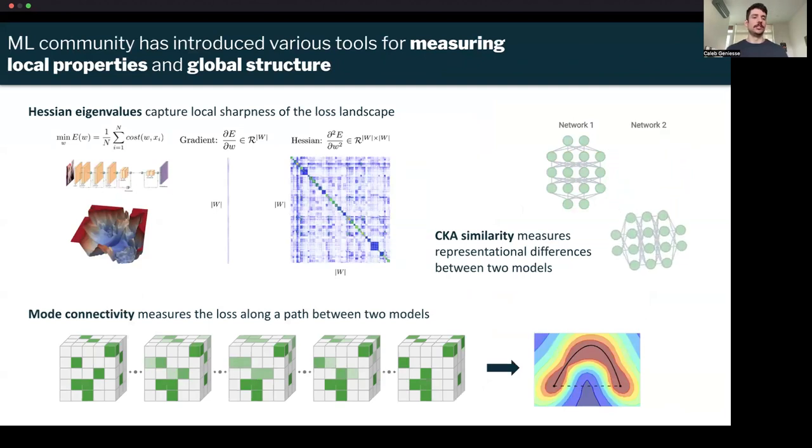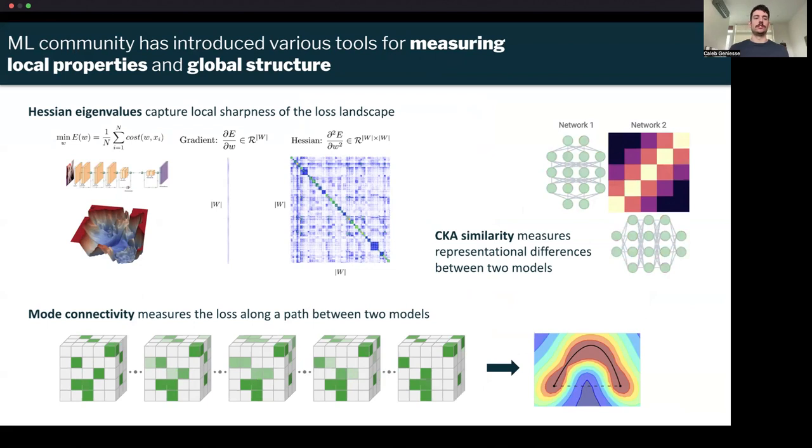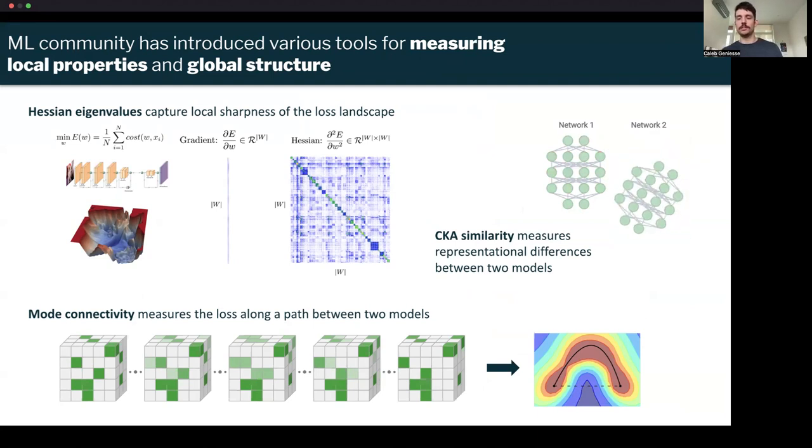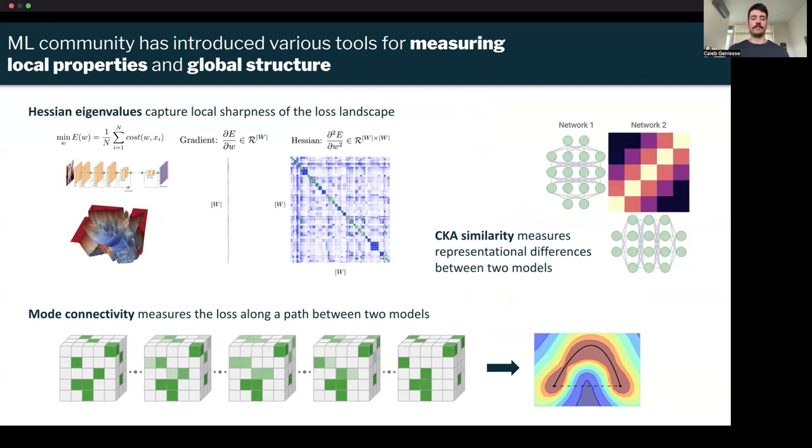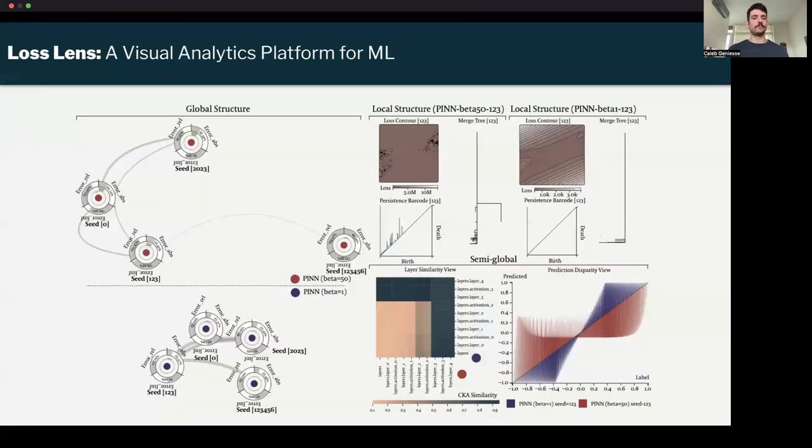Some things we're going to look at include the Hessian eigenvalues, which capture the local sharpness of the loss landscape or the curvature. CKA similarity captures representational differences between two models. You can look at layer-wise or model-wise differences. And then mode connectivity measures the loss along a path between two models and essentially captures the height of barriers that are separating two different models.